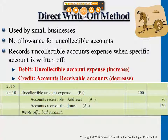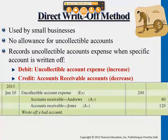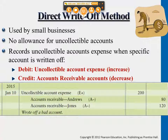Some small businesses use this method because making all these journal entries is a little bit more costly for them. So they would just directly write off Andrews and Jones, the bad debt accounts, whenever they determine that these are the accounts that are past due and consider these as uncollectible account expense. The difference is that they don't have an allowance pool — they just use uncollectible account expense debited and credit accounts receivables.